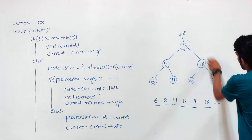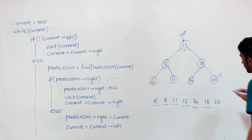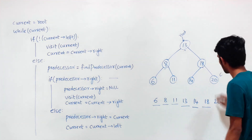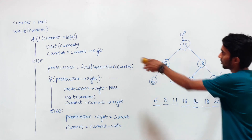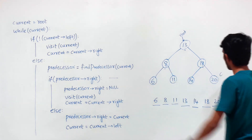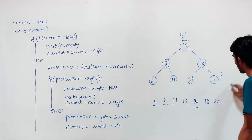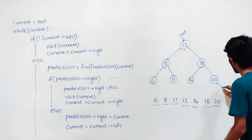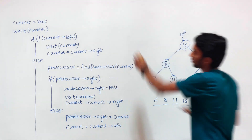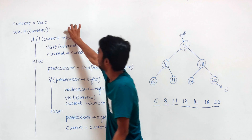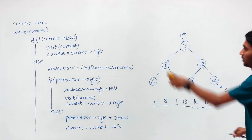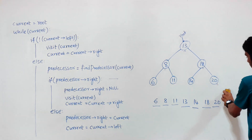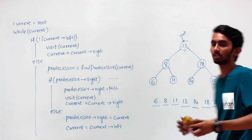Current goes to 20. When we are at 20, we don't have a left subtree, so we simply visit 20 and move current to current's right, which is null. Current becomes null and the loop terminates. This is how Morris in-order traversal works.